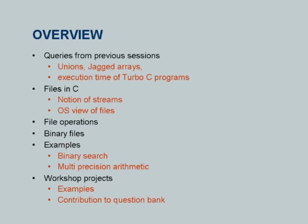What we discussed in terms of basic IO will be extended by properly defining files. We will look at possible file operations and more specifically binary files and random access files. Then we will look at two examples — one on binary search — and we will discuss the workshop projects, taking some examples and talking about contributions to the question bank.